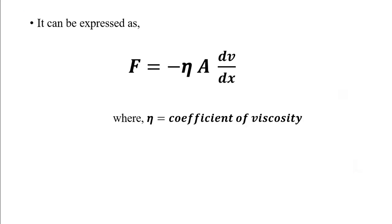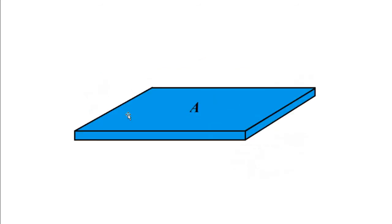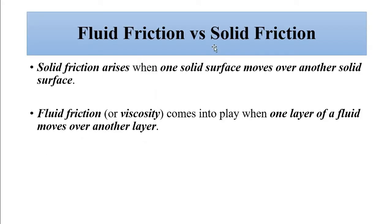This equation governs the value of fluid friction force. As you can see, it depends on the relative motion of the fluid layers — the velocity difference — the gap between the layers, and the cross-sectional area of the fluid layers. Let us now compare fluid friction and solid friction, looking at both similarities and differences.